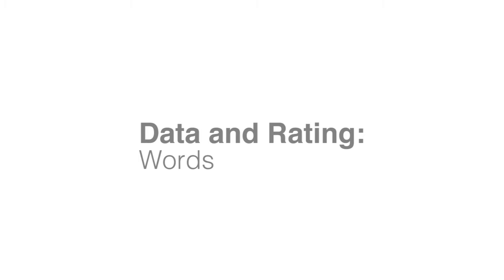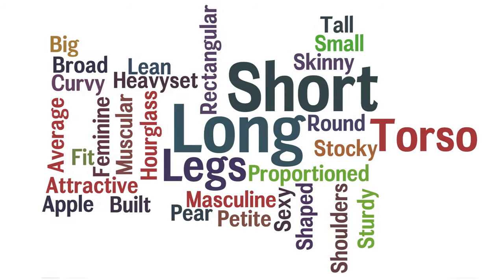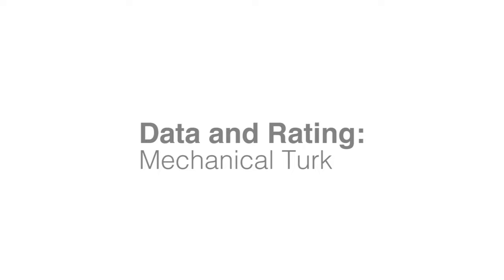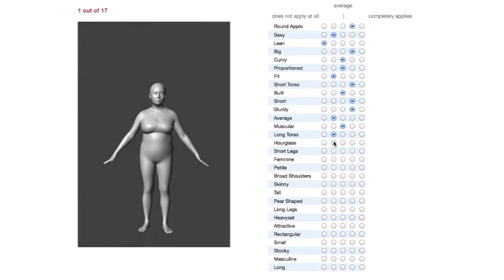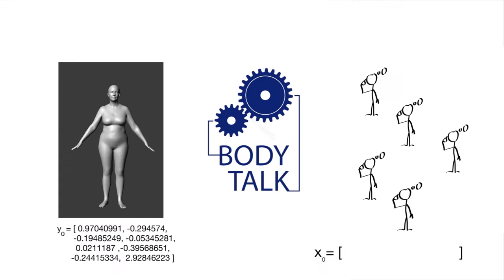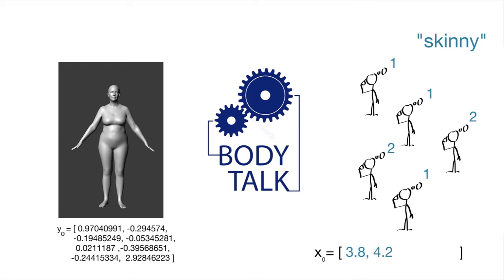We also generated a list of 30 words that describe human shape. We hypothesized that people have a shared understanding of shape, and that this is reflected in our use of language. If we agree on what shape means, then we conjectured that the collective judgement of shape attributes by the crowd contains a robust signal about body shape. Using Amazon Mechanical Turk, we showed people images of bodies and had them rate them according to words on a 5-point scale. We collected 15 ratings for each word and for each body, then averaged these ratings, giving a vector of attribute values for each body.